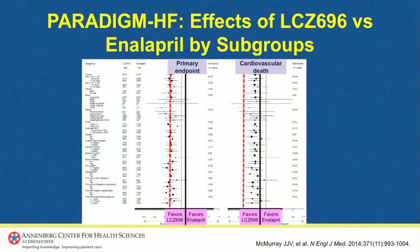We were also pleased to see a significant reduction in cardiovascular death alone. The reduction was the same magnitude as the primary endpoint — 20% — also with a very significant p-value, and a number needed to treat of 32 patients to prevent one cardiovascular death over the course of the trial. These findings were consistent across all pre-specified subgroups, with point estimates to the left of unity, favoring LCZ-696 over Enalapril.